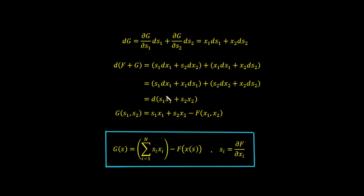All we've done here is used the product rule in reverse. To generate d(s1·x1), we differentiate s1 and multiply by x1, then differentiate x1 and multiply by s1 — giving two terms. Similarly for d(s2·x2). So the final Legendre transform for our function of two variables is: g of s1, s2 equals s1·x1 plus s2·x2 minus f of x1, x2.